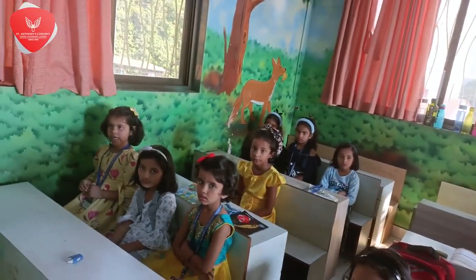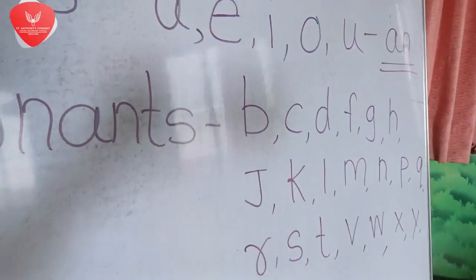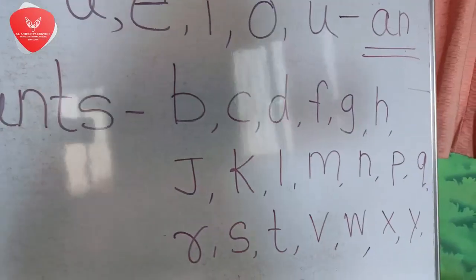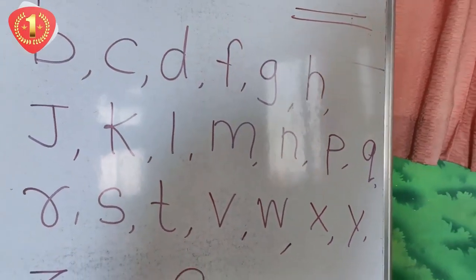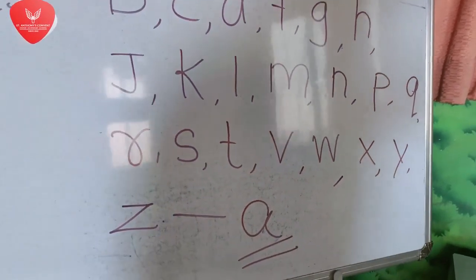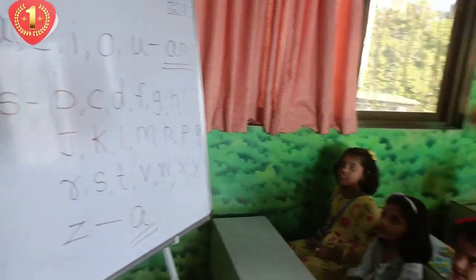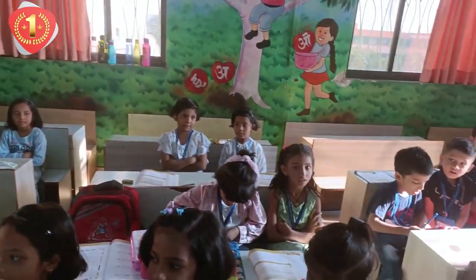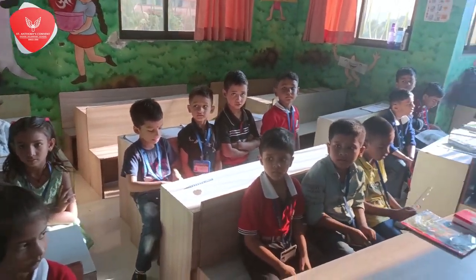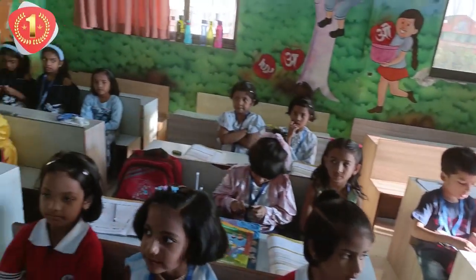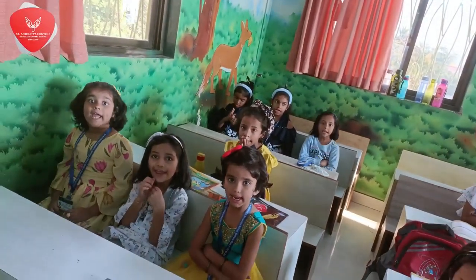And when do we use the A article? The remaining letters — B, C, D, F, G, S, J, K, R, M, N, Y, Z — these are called consonants. When the word begins with a consonant sound, we use the A article.